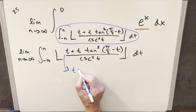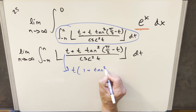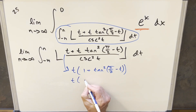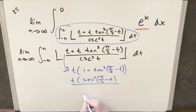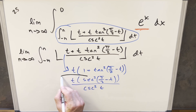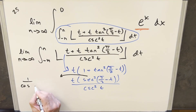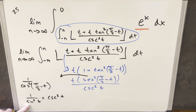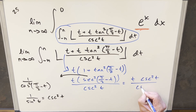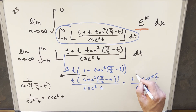We have t in common in the numerator, so let's factor out a t, giving t·(1 + tan²(π/2 − t)). Using the identity 1 + tan² = sec², this becomes t·sec²(π/2 − t). Bringing the cosecant² back in for the whole expression, we have cosecant²(t) in the denominator. For sec²(π/2 − t), using the complementary angle formula, cos(π/2 − t) = sin(t), so sec²(π/2 − t) = 1/sin²(t) = cosecant²(t). Updating the expression: t·cosecant²(t) / cosecant²(t) — these cancel, and everything inside the floor function simplifies to just t.